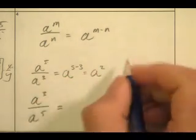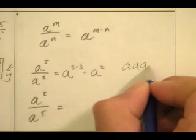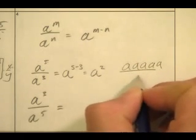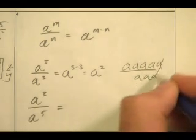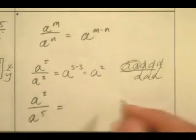You can also see it by saying, if I have a, a, a, a, a over a, a, a, well, those are all ones, and I get a times a, which is a squared. Yes, you get the same thing. You know what I'm saying?